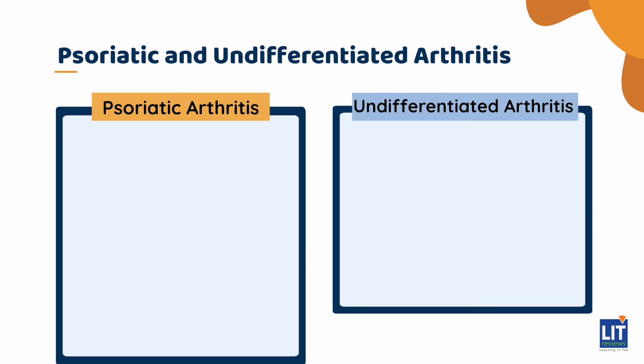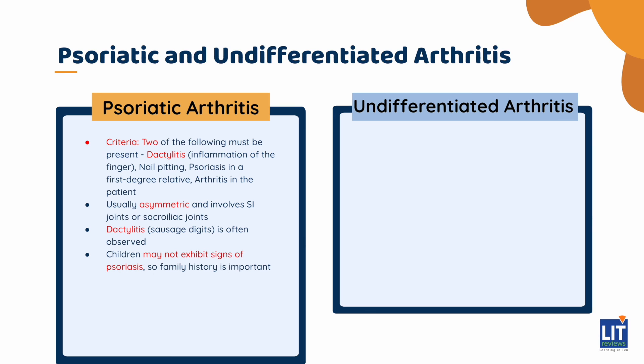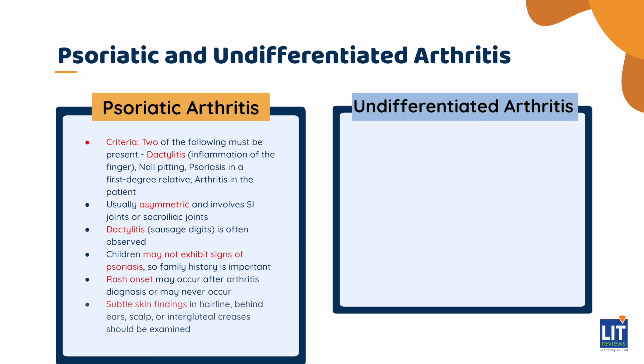The criteria for psoriatic arthritis includes two of the following: dactylitis or inflammation of the finger, nail pitting, or psoriasis in a first-degree relative, along with arthritis in the patient. It is usually asymmetric, involves the SI joints, and often includes dactylitis, also known as sausage digits. Children do not often have signs of psoriasis, so family history is important. The onset of rash often occurs after the arthritis has been diagnosed, but sometimes a rash never occurs. Since skin findings can be subtle, it is important to look for lesions in the hairline, behind the ears, the scalp, or in the intergluteal creases.